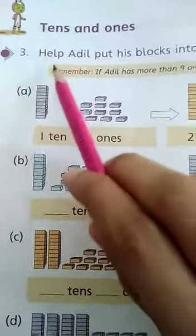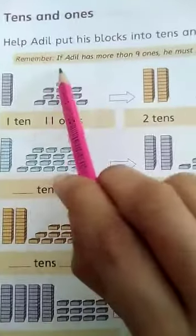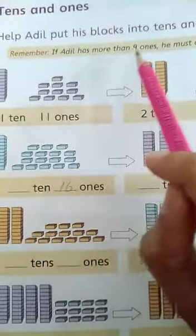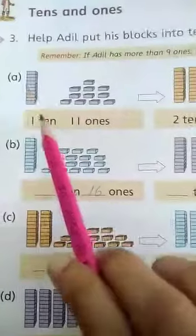Our question number 3 is: Help Adil put his blocks into the tens and ones. Remember, if Adil has more than 9 ones, he must change. Okay.